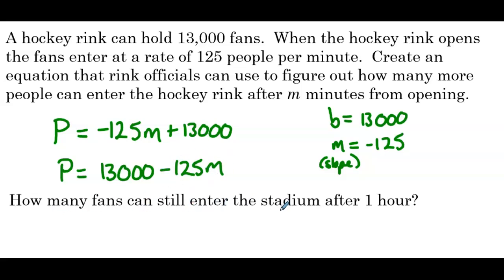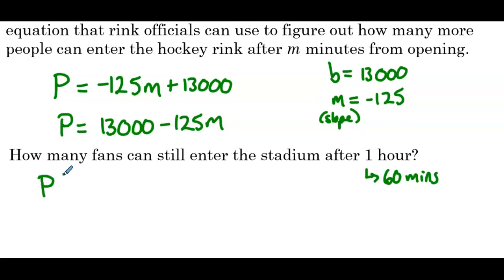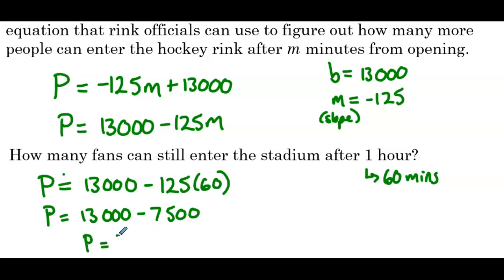So how many fans can still enter the stadium after one hour? So the first thing we have to realize is we're not plugging one into the equation. m is the number of minutes. So one hour is 60 minutes. So we're going to plug 60 in for m. So minus 125 times 60. So p equals 13,000 minus 7,500. So 13,000 minus 7,500 is 5,500. So that means 5,500 fans can still come into the stadium after one hour.